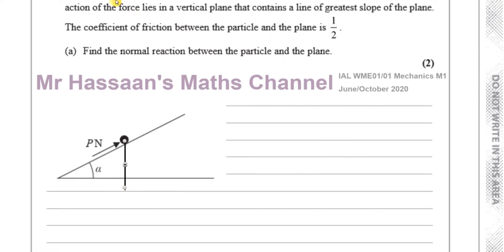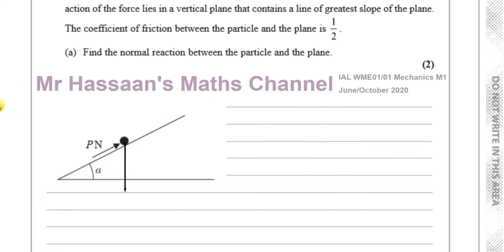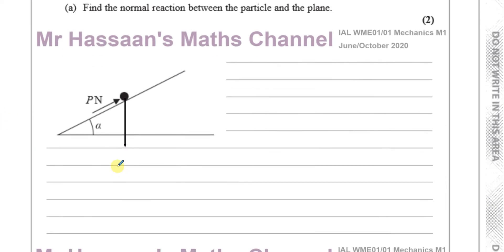Its weight — its mass is 10 kilograms, so its weight is 10g newtons. That doesn't mean grams; that means g, the acceleration due to gravity — 10 times 9.8, basically. So 10g newtons is its weight. Then you have the force P, which is basically pushing it up, kind of holding it up.